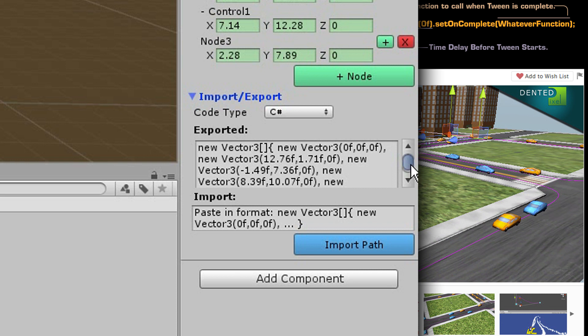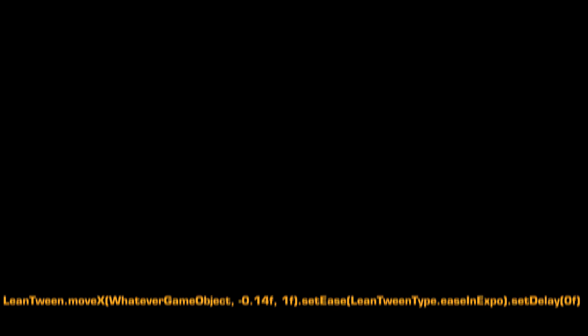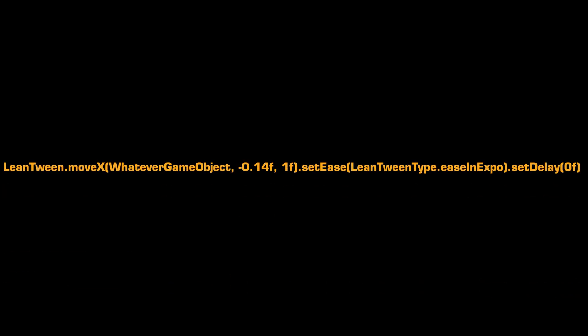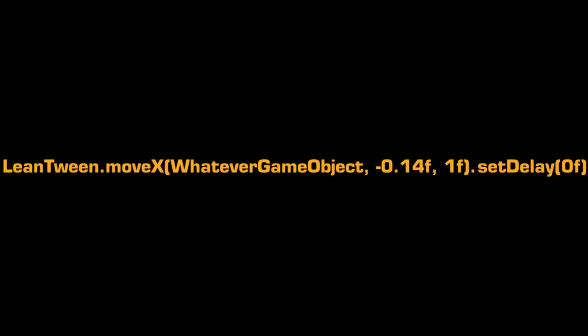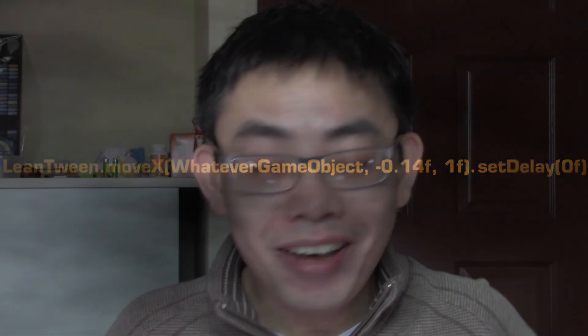As time goes by, you'll learn that LeanTween can tween almost everything tweenable, from colors to materials. LeanTween works like Legos — if you need something, you just add it; or else you can remove it. It doesn't force you to put in criteria you don't need. I love this; I wish every asset behaved like this.